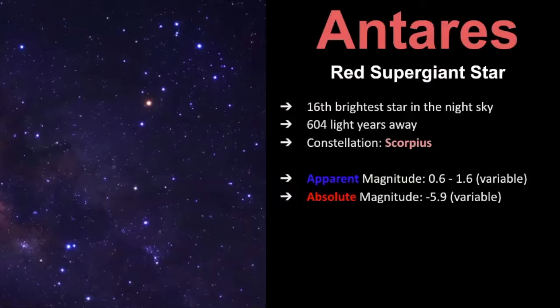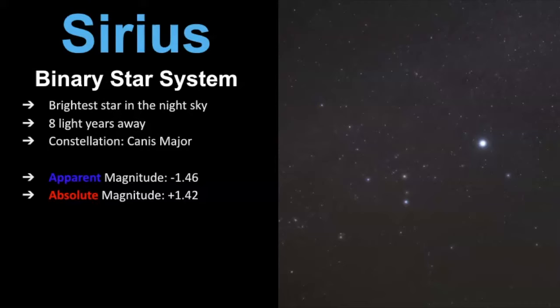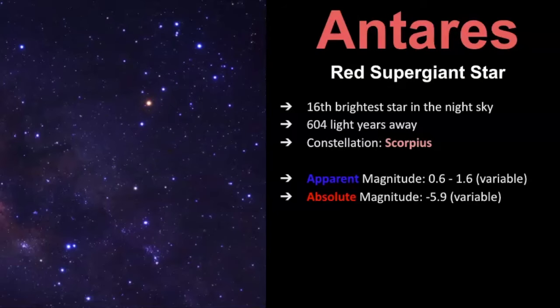So, let's keep looking and exploring this. I'm going to give you another star, Antares. Antares is a red supergiant star. If you're looking at this gorgeous constellation of Scorpius, it's the red star towards the upper center right here. Now, Sirius, the one we were just at, this is the brightest star in the night sky, where this one right here is the 16th brightest star in the night sky. It's much further away. That's 604 light years away, and it's in the constellation of Scorpius. So, now we're going to look at the apparent magnitude and absolute. So, the apparent magnitude, it's a variable star. So, it ranges from 0.6 to 1.6.